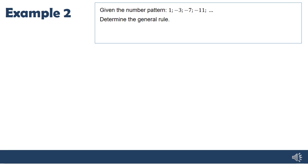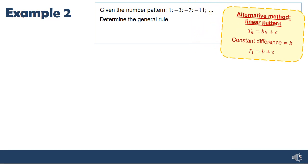The way we found the general rule in the last example is probably similar to what you did in grades 9 and 10, but your textbook introduces an alternative method. If you've always struggled with number patterns, perhaps this method is worth trying. The book gives a general formula T_n = bn + c.